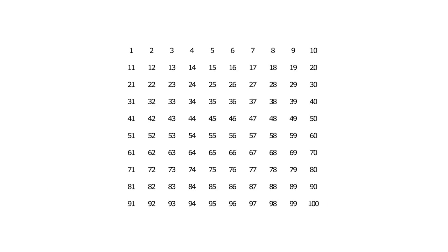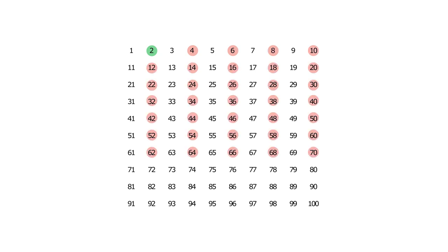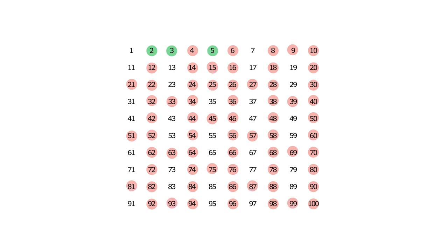If you've looked at anything to do with prime numbers, you've seen the Sieve of Eratosthenes, and it's a really handy way of visualising prime numbers and composite numbers. You've probably seen it on a 10x10 grid, which makes some sense because we use a base 10 number system and it's familiar, but the concept isn't wedded to being 10 columns wide.